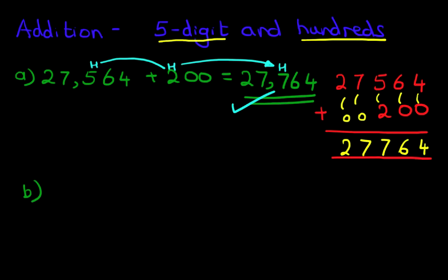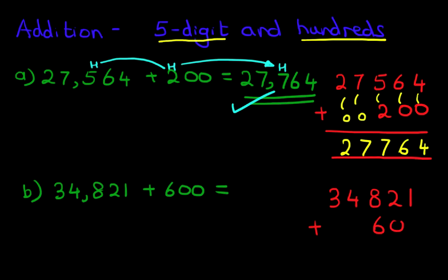Okay, let's look at our second example. This time we're going to do some carrying. We've got 34,821 plus 600. Okay, the first step, as we did before, is to rewrite this in the vertical format. So we've got 34,821 plus 600.